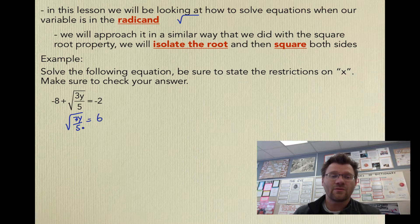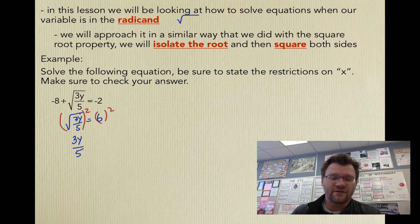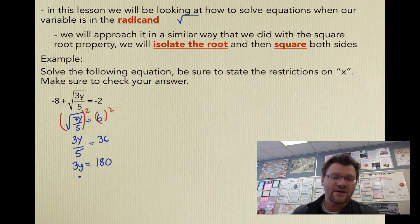Then we square both sides, so we get 3y over 5, because squaring both sides cancels out the root, and that equals 36. When we multiply both sides by 5, we get 180, since 36 times 5 is 180, and then we get y equals 60.